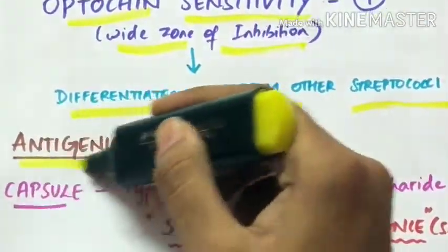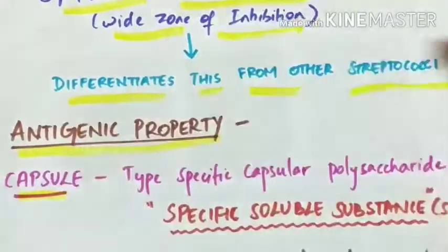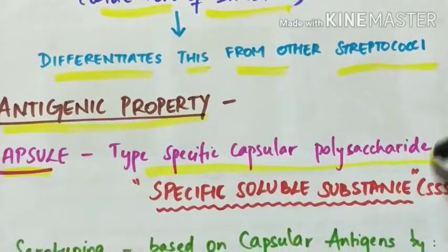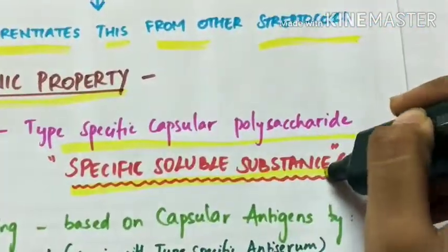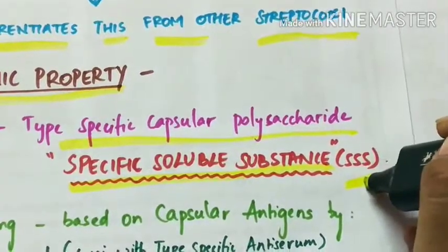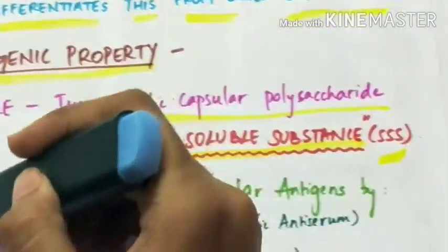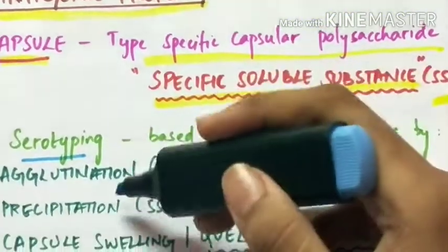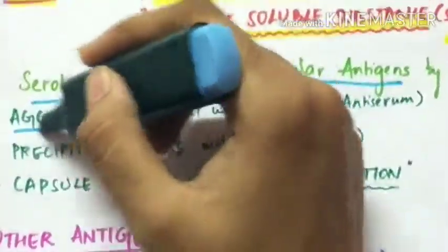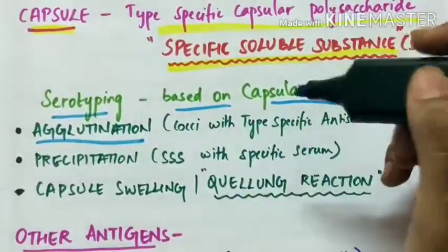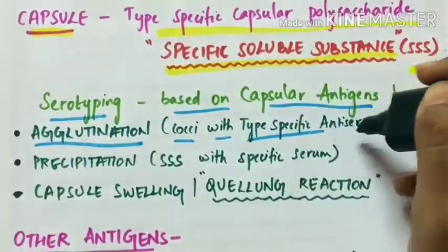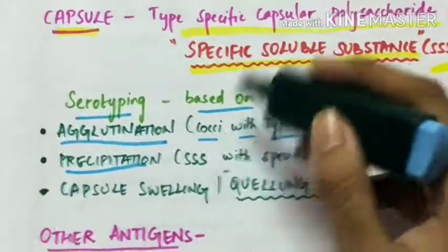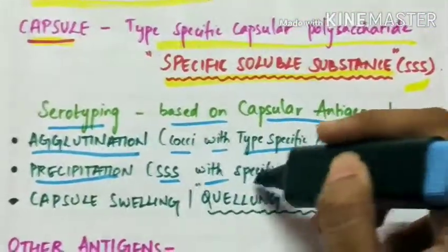Antigenic property. Capsule. It has type specific capsular polysaccharides called specific soluble substance, SSS. Serotyping is done based on the capsular antigens by either of three methods. First is agglutination, useful for cocci with type specific antiserum. Precipitation for specific soluble substance with specific serum.